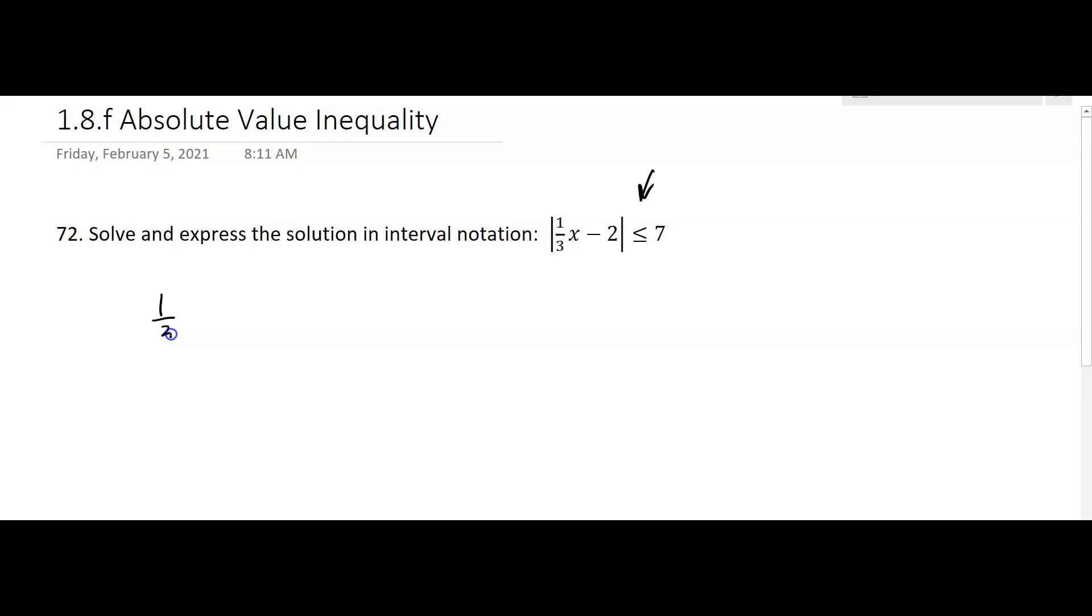You're going to sandwich it between the positive case on the right and the negative case on the left. So we have this statement in compact form: negative 7 is less than or equal to 1/3x minus 2, which is less than or equal to 7.